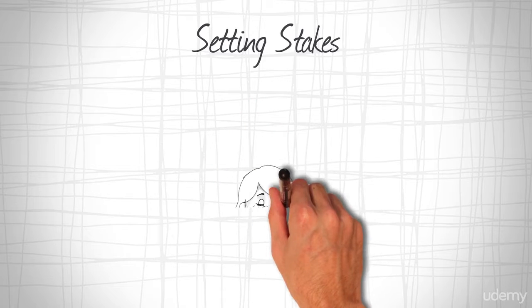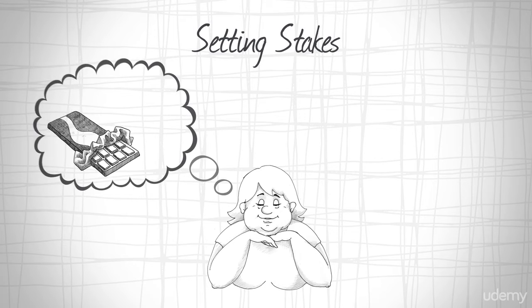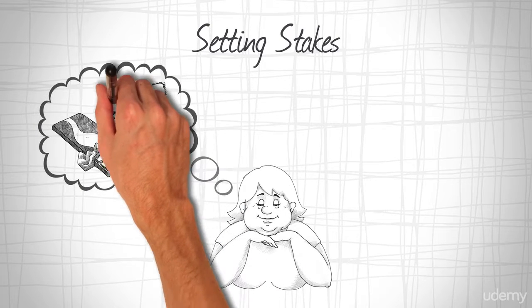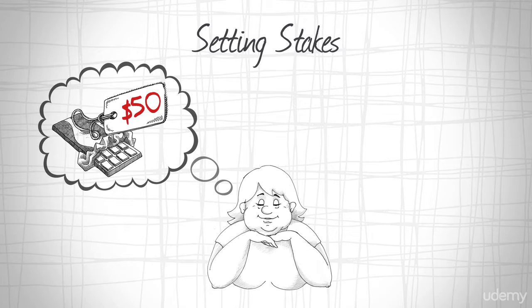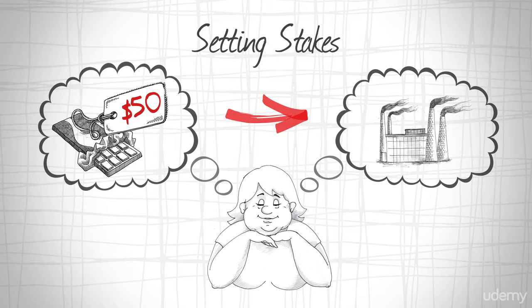Let's say you penalize yourself $50 every time you eat a chocolate bar. How long would you keep eating it if each bar cost you $50? What if you would not only lose $50, but watch it go to an organization you hate?